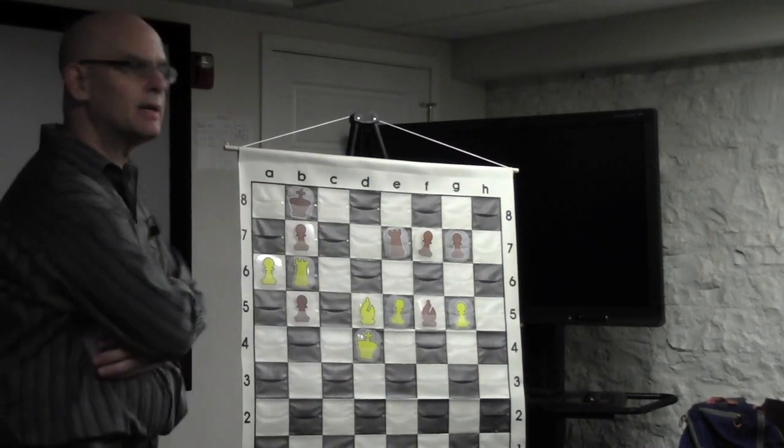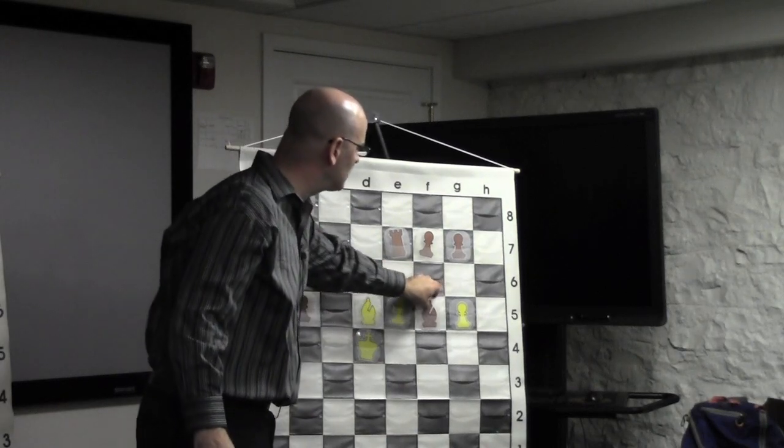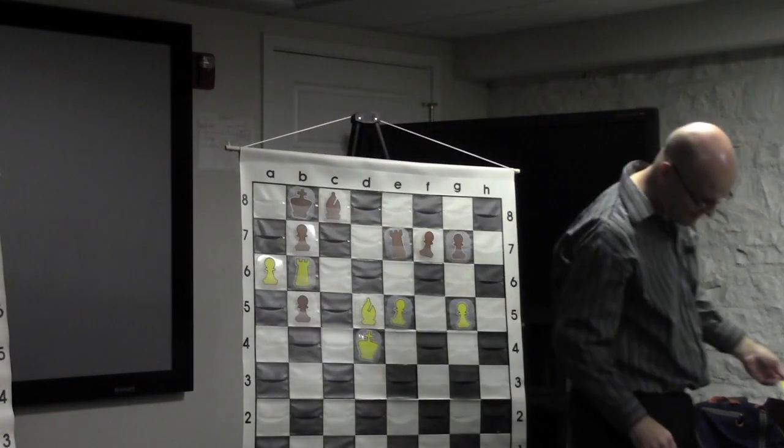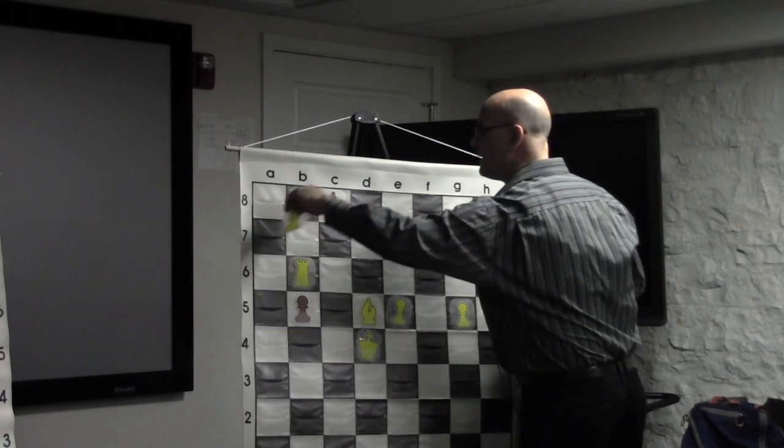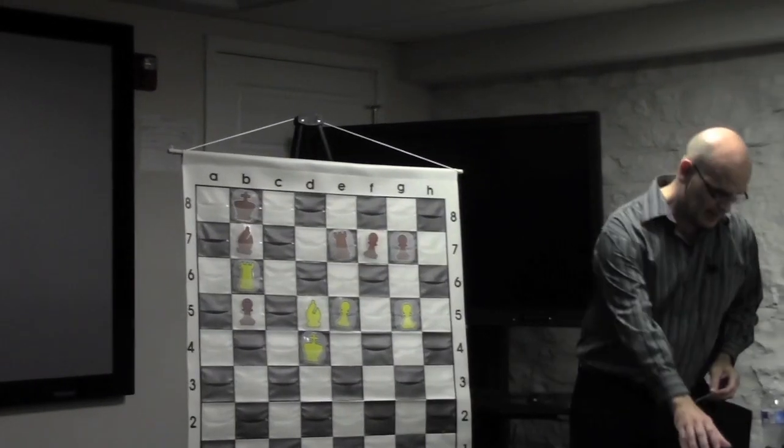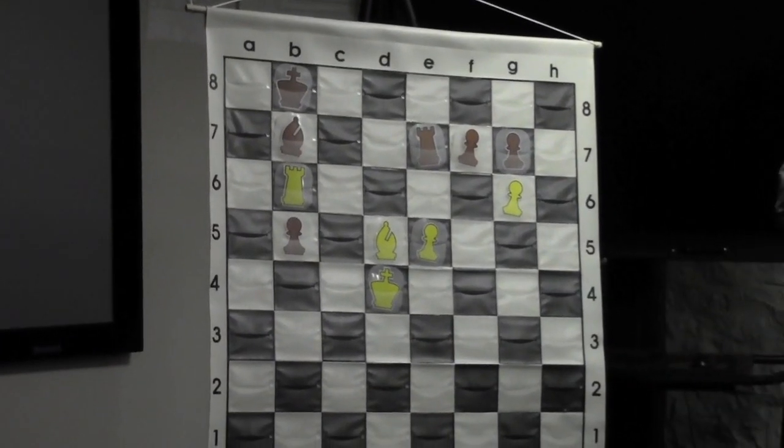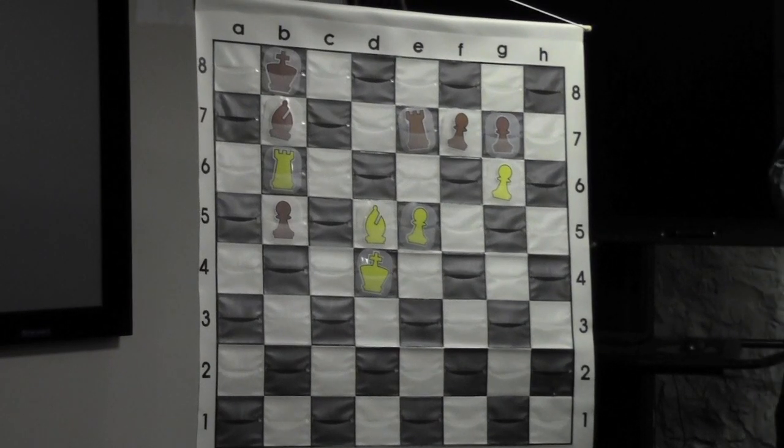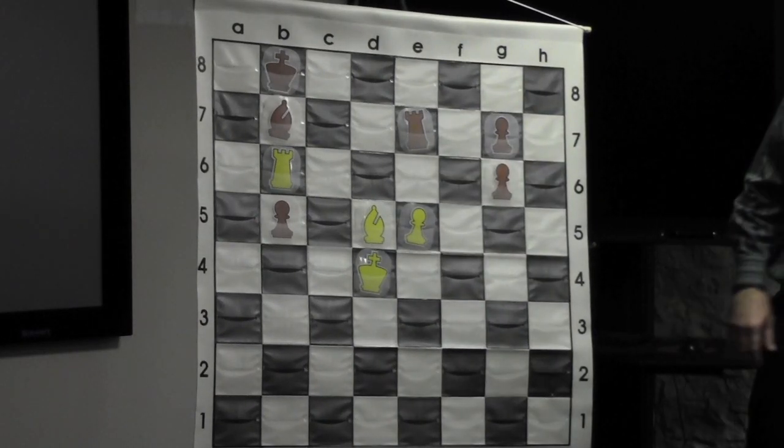Now white is threatening to get quite a strong passed pawn here on b7, and black's pawn on b5 will be weak. But black played, I think the move most of us would play, Bishop c8, just trying to hold that pawn. And now we go a takes b7, bishop takes. And now I was not interested in winning my pawn back on b5, but rather playing g6. And now the point of all this is revealed: e6.